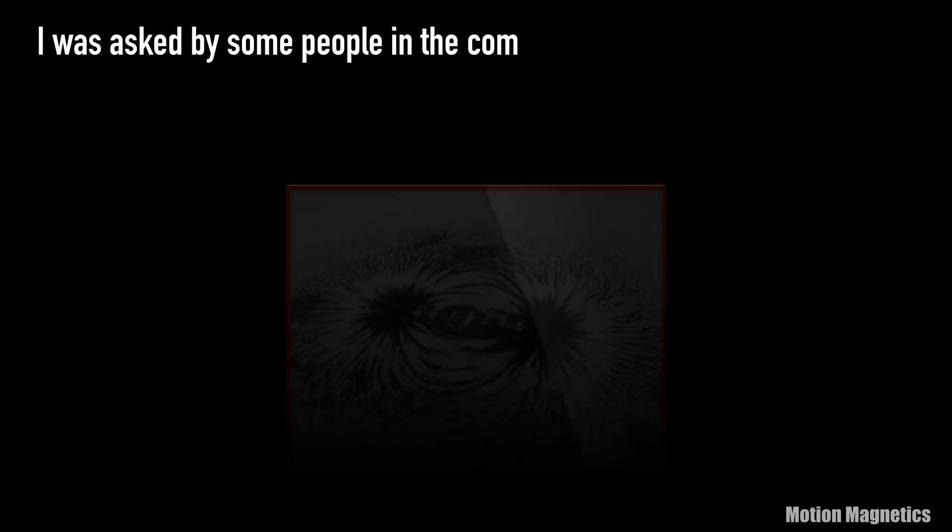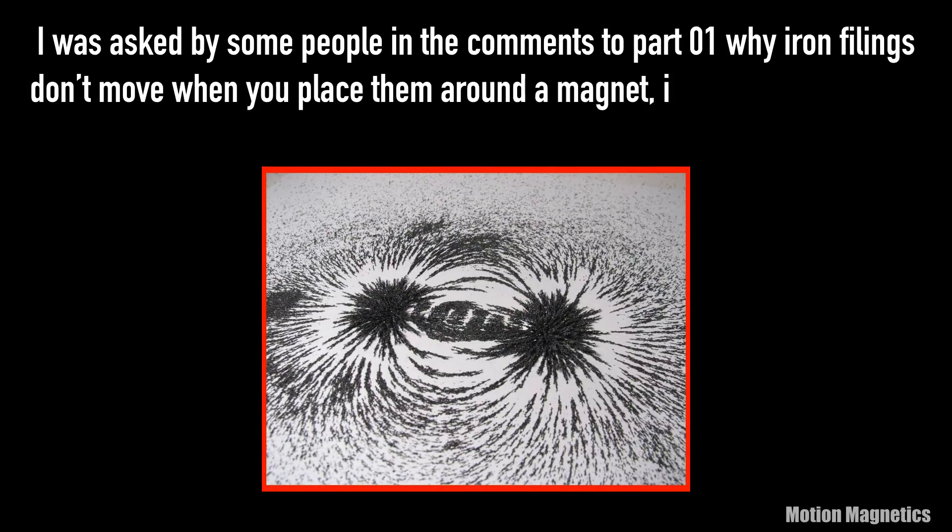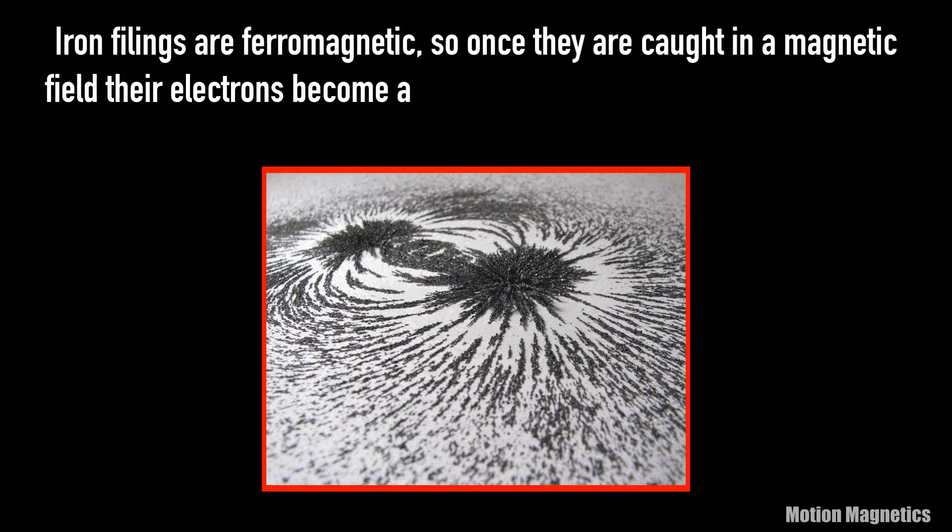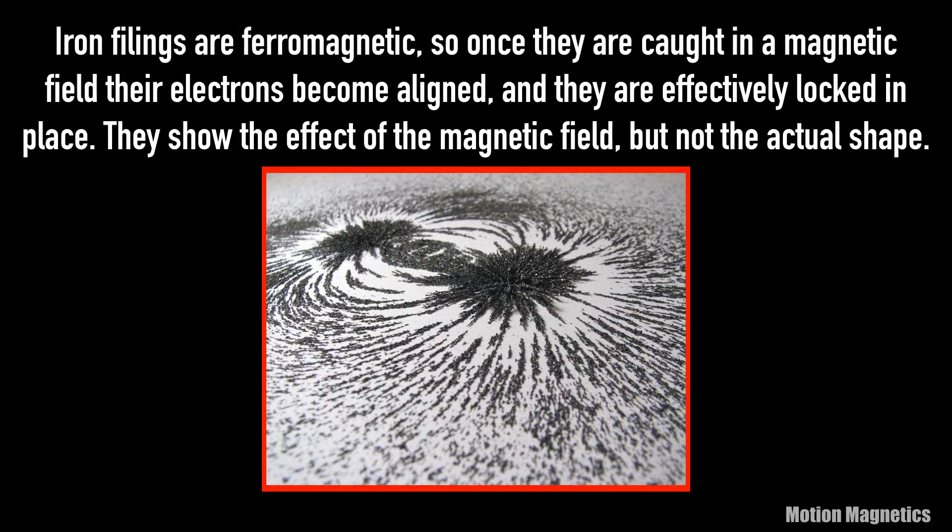I was asked by some people in the comments to part 1 why iron filings don't move when you place them around a magnet if there is a magnetic spin vortex. Iron filings are ferromagnetic, so once they're caught in a magnetic field, their electrons become aligned and they're effectively locked in place. They show the effect of the magnetic field, but not the actual shape.